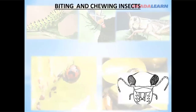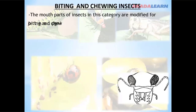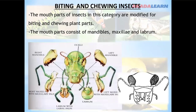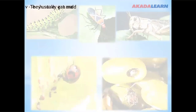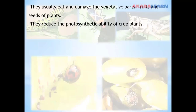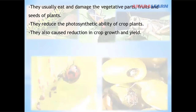Let's start with the biting and chewing insect pests of crops. The mouth parts of insect pests in this category are modified for biting and chewing plant parts. The mouth parts consist of mandible, maxillae, and labrum, as shown in the picture. They usually eat and damage the vegetative parts, fruits, and seeds of plants, reducing the photosynthetic ability of crop plants. They also cause reduction in crop growth and yield.